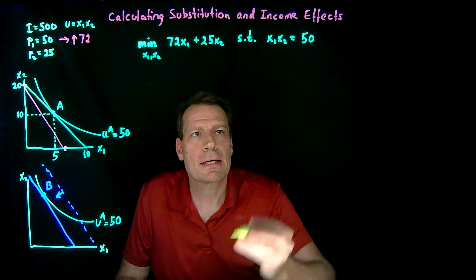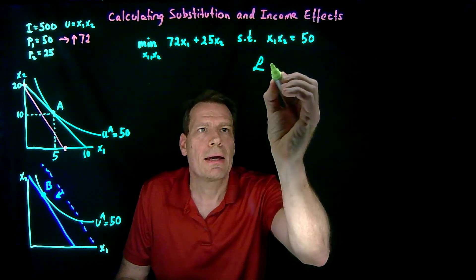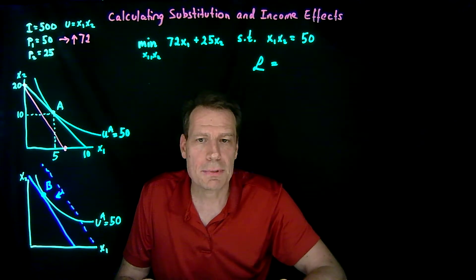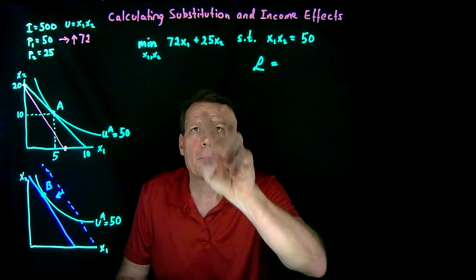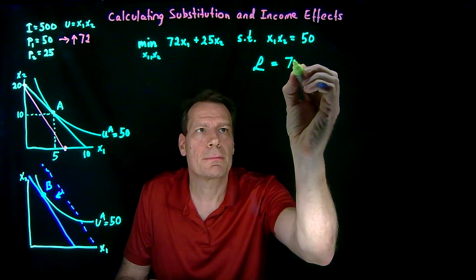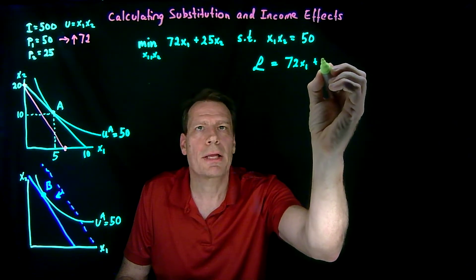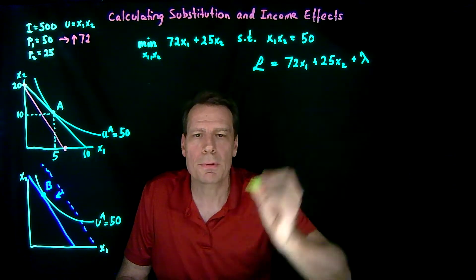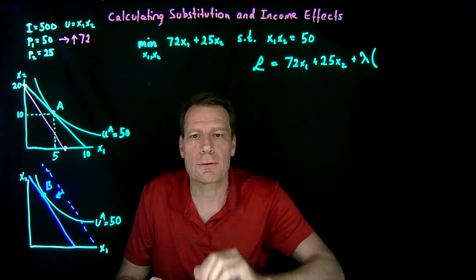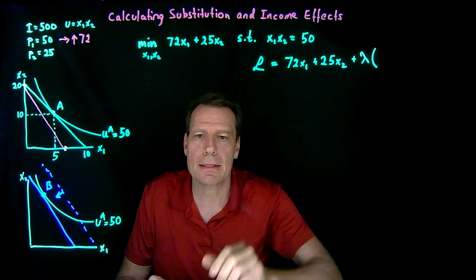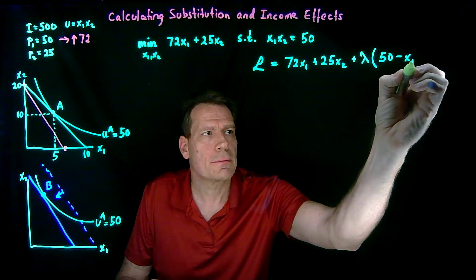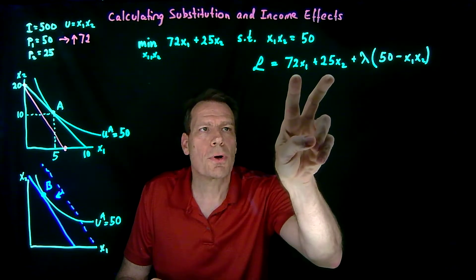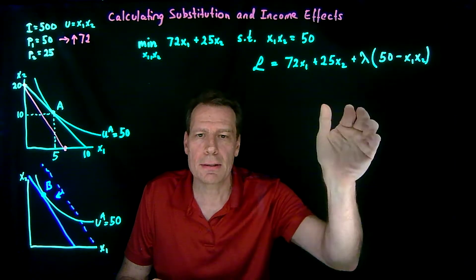So how did we do that? Well, we set up a Lagrange function. That Lagrange function had two components. The first component is that thing we're trying to optimize. In the case of the utility maximization problem, that was the utility function. But now we're trying to minimize the expenditure. So that's the first thing that appears in the Lagrangian. 72 times x1 plus 25 times x2. And the second part is a lambda, the Lagrange multiplier, times the constraint with all the terms collected to one side. So we can subtract x1 x2 from both sides and we get 50 minus x1 x2. So we're doing exactly the same thing we did when we did the utility maximization problem. Put what you're optimizing here and then lambda times the constraint with everything collected to one side of the equation.